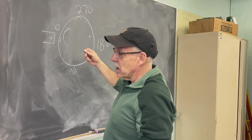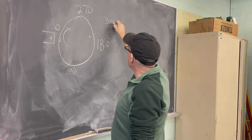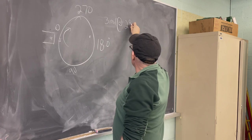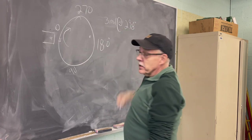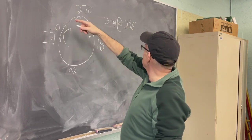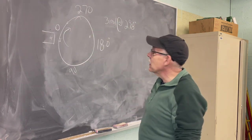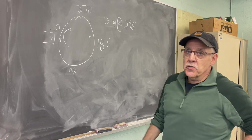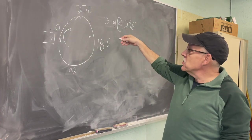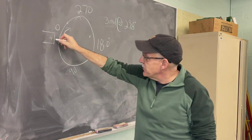We can use phase to find a heavy spot. For example, when balancing we might have three mils of vibration at 298 degrees, which places the heavy spot at a specific location on the roll. That's another way we use phase to identify where the heavy spot is during balancing.